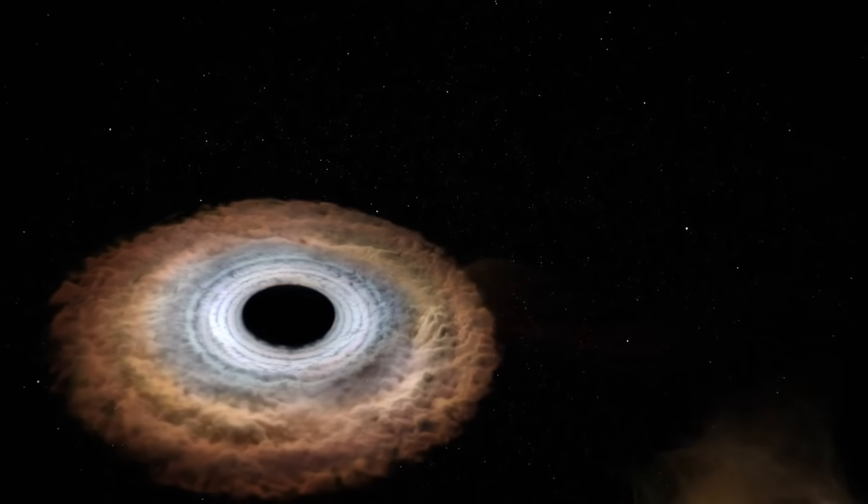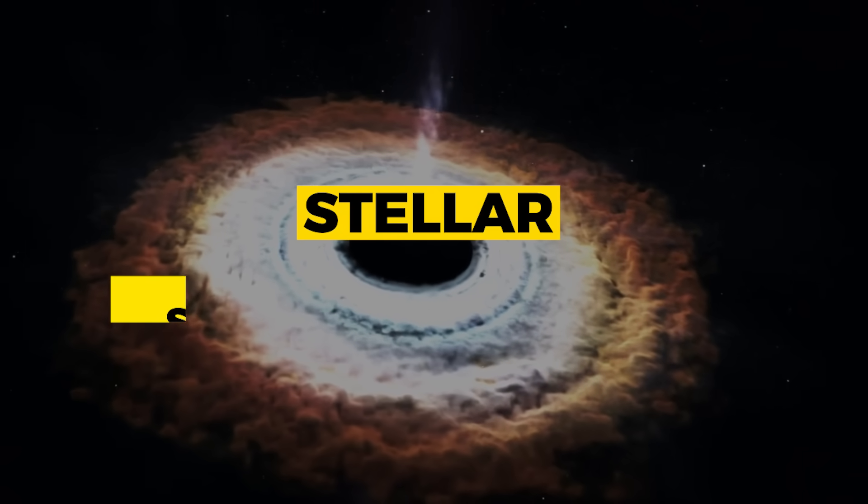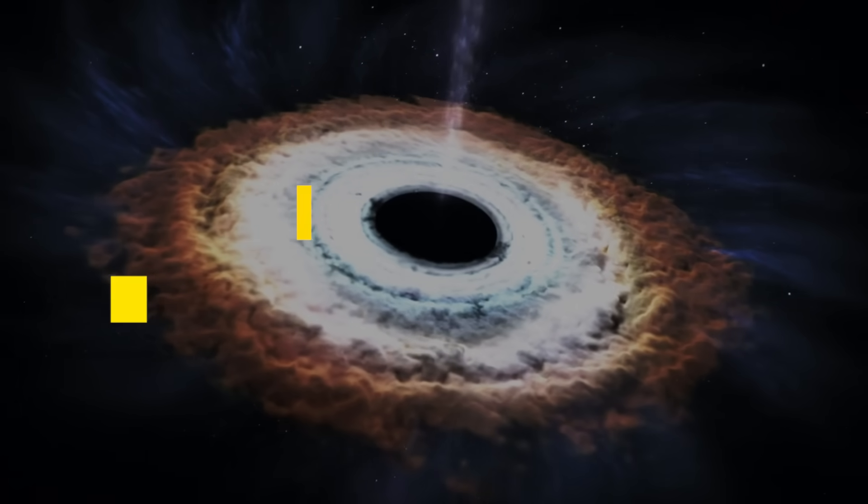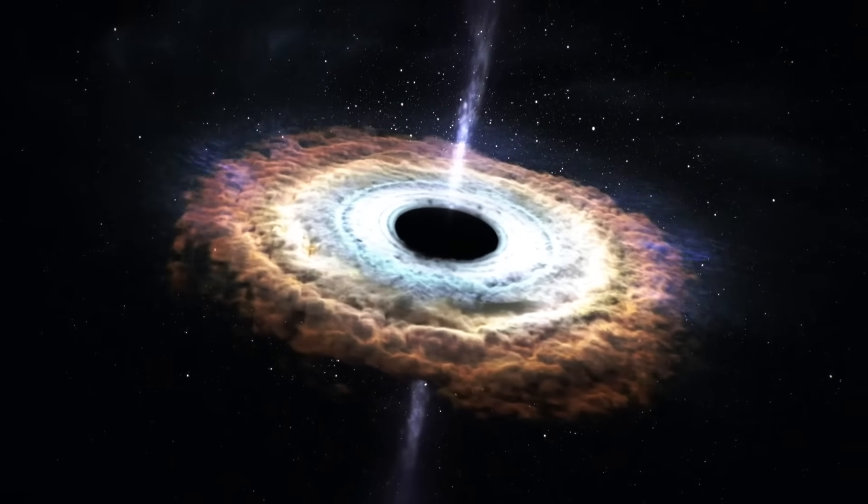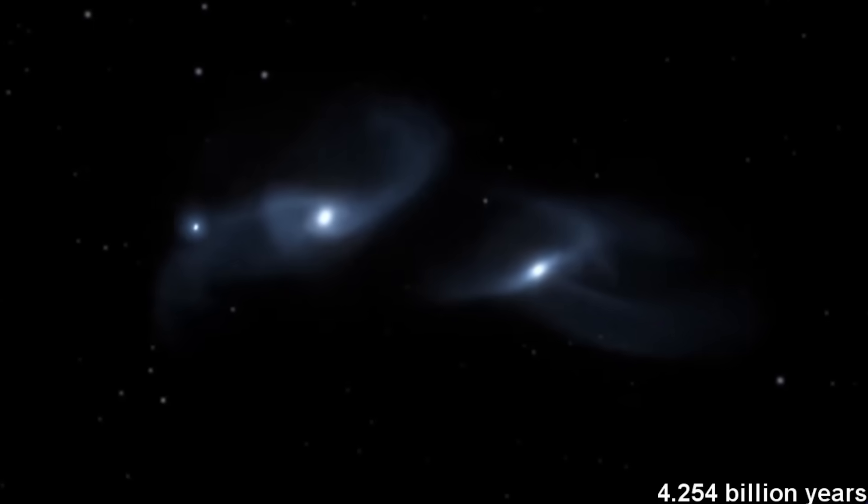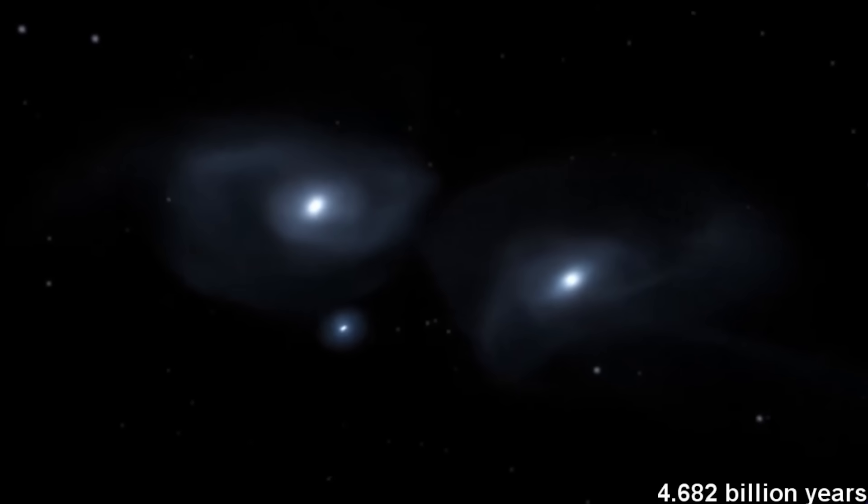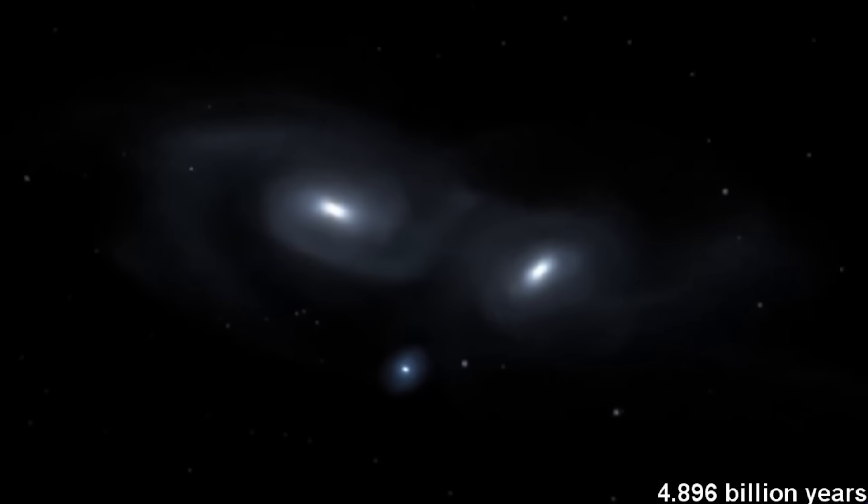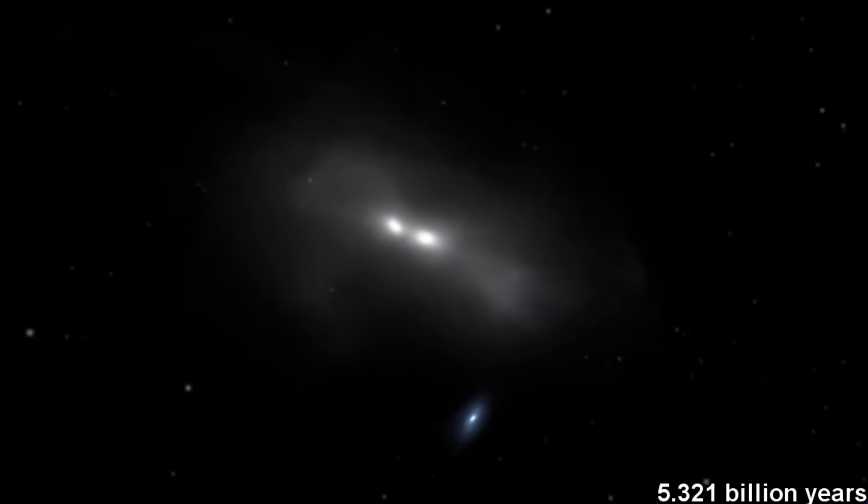The most prevalent black holes, according to scientific theories, are stellar and supermassive black holes. Stellar black holes are created when huge stars collide and die. They are dispersed across the cosmos and have masses between 10 and 20 times that of our Sun. These black holes may number in the millions, only in the Milky Way.